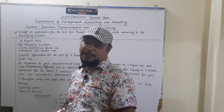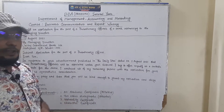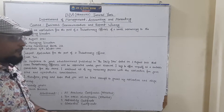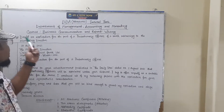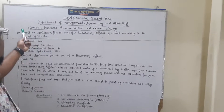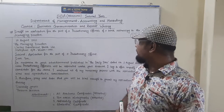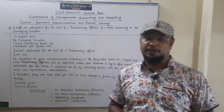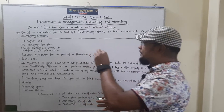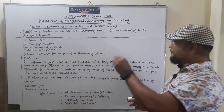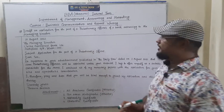This course — business communication and report writing — I am discussing about job application with CV. There is a question: draft an application for the post of a probationary officer of a bank, addressing the managing director. That means you have to apply an application for the post of probationary officer of a bank. This is an imaginary address.